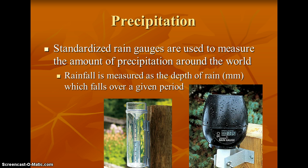To measure precipitation, we use a rain gauge, and we can use digital or analog. It measures the depth of rain in millimeters over a certain area in a given period of time.